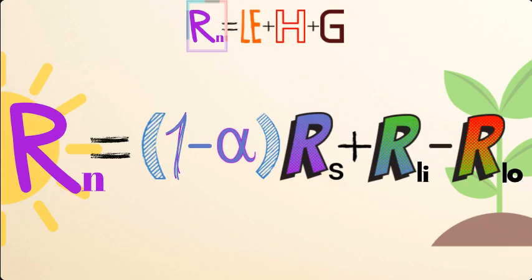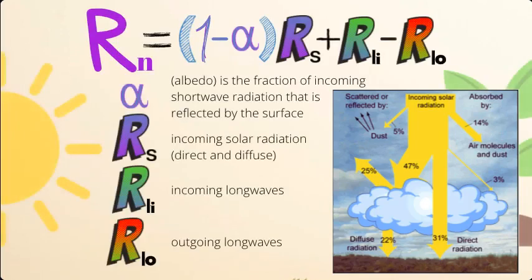Each of these variables has its own definition. Alpha, being the albedo, is the fraction of incoming shortwave radiation that is reflected by the surface. Rs is the incoming solar radiation, both direct and diffuse. You can see in the picture on the screen that nearly one-third of the radiation is direct, and about 20% is diffused through objects such as clouds. Then we have plus Rli, which is incoming long waves, and minus Rlo, which is outgoing long waves. Long waves are typically emitted through the atmosphere.